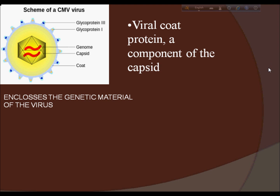Some viruses are enveloped, meaning that the capsid is coated with a lipid membrane known as the viral envelope. The envelope is acquired by the capsid from an intracellular membrane in the virus host. Examples include the inner nuclear membrane, the Golgi membrane, and the cell's outer membrane.